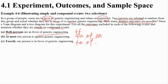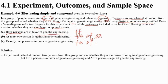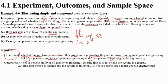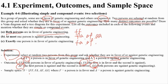Solution: The experiment is to randomly select two persons from the group and ask whether they favor or are against general engineering. F means favor, A means against. The four possible outcomes are FF, FA, AF, and AA.